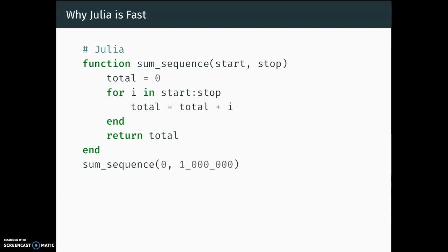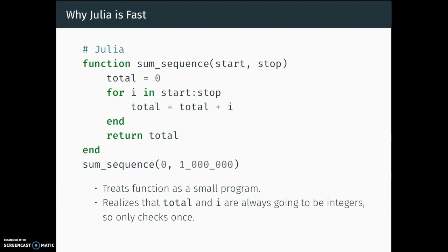Here's where Julia differs. Julia treats every function as a standalone program. When you call a function in Julia, it looks at the whole thing rather than running line by line. It says: if start and stop are both integers, I know that total is an integer, I know the iterator gives only integers — so total and i are integers every time through this loop. I can figure this out by looking at the whole thing, so I don't need to check types one million times. I can write machine code that just does integer addition one million times. That's a huge part of why Julia is so much faster.